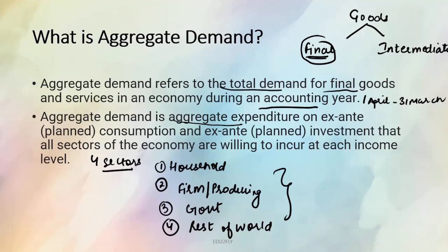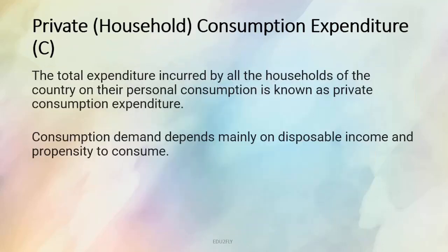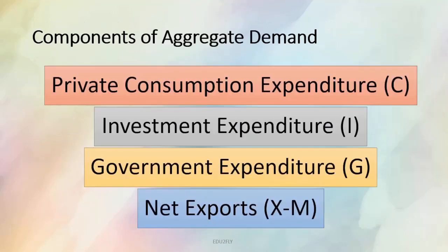Let us move on to the components of aggregate demand. There are four components: one is the private consumption expenditure, other one is the investment expenditure, third one is the government expenditure, and fourth one is the net exports which is X minus M — net exports means exports minus imports. These four components correspond to the four sectors: household, producing sector, government sector, and rest of the world.